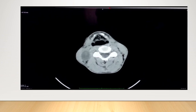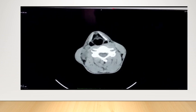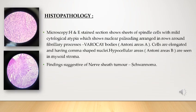Histopathological examination shows sheets of spindle cells with mild cytological atypia, which show a nuclear palisading pattern arranged in rows known as Verocay bodies — Antoni area A. Cells are elongated having comma-shaped nuclei. Hypocellular areas, also known as Antoni area B, are seen in myxoid stroma. Findings are suggestive of a nerve sheath tumor — schwannoma.